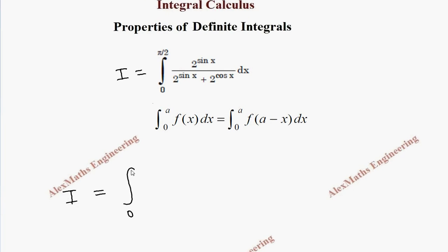So I becomes integral 0 to π/2 where every x is replaced by a minus x. Here a is π/2, so every x is replaced with π/2 minus x. So we have 2^(sin(π/2 - x)).